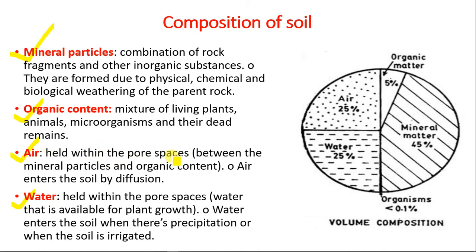Air and water are held within the pore spaces between the mineral particles and organic content. Air enters the soil by diffusion. Water is also held within the pore spaces, available for plant growth. Water enters the soil through precipitation — which can be rain or snow — or when the soil is irrigated.